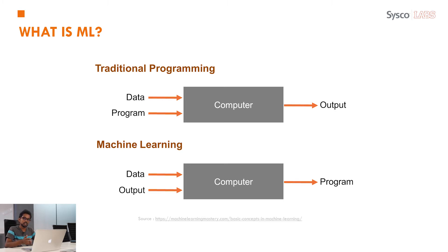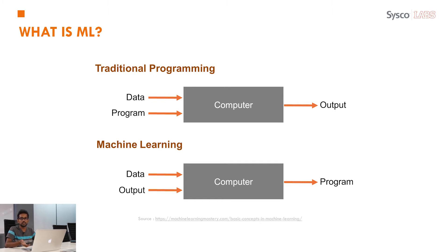For a computer, we install a program, give our data as inputs, and get our outputs. But there are certain problems we cannot solve that way. For example, how can we write a program to identify cats in a picture? If I have a bunch of images of cats and dogs, how can I come up with a solution to classify those images? That kind of problem cannot be solved using traditional programming.